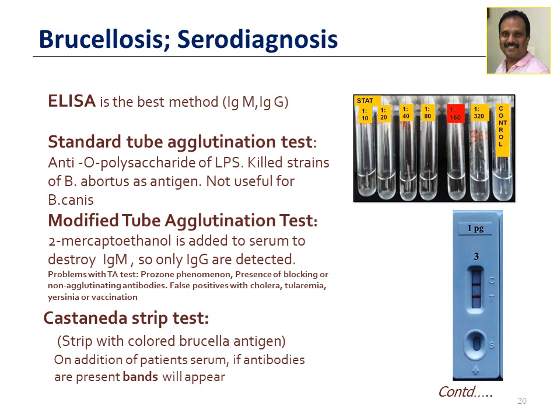The STA detects antibodies against the lipopolysaccharide (LPS); the antigen used is killed strains of Brucella abortus. The STA is not useful for diagnosing Brucella canis infections. The Modified Tube Agglutination Test (MTAT) involves adding mercaptoethanol to the serum to destroy IgM antibodies, so only IgG antibodies are detected. False-positive results are possible in cholera, tularemia, Yersinia infections, and following vaccination against Brucella species.